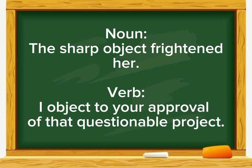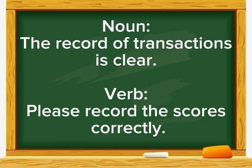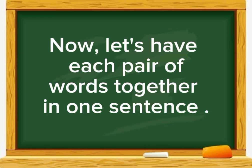Noun: The sharp object frightened her. Verb: I object to your approval of that questionable project. Noun: The record of transactions is clear. Verb: Please record the scores correctly.